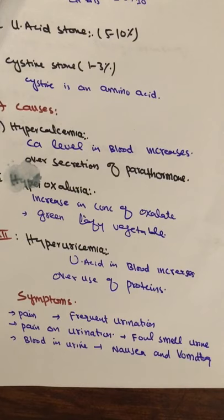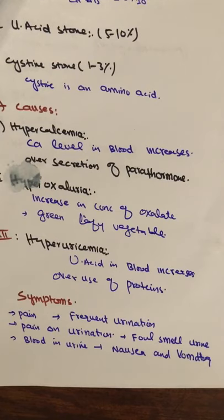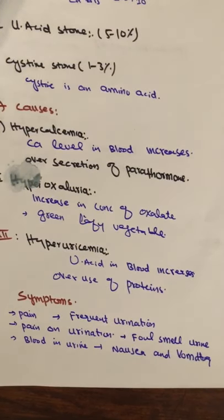If there are kidney stones, what are the signs and symptoms? First of all, there is pain in the lower abdominal region. There is also frequent urination. Pain on urination is one of the most common problems. Other symptoms include nausea and vomiting. These are the main symptoms of kidney stones.